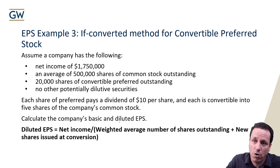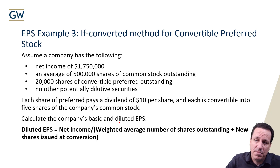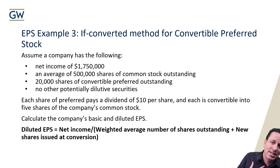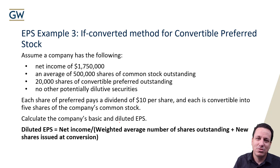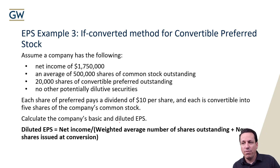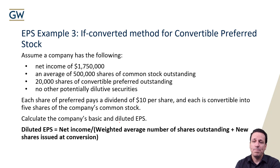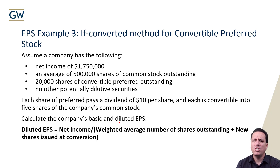So let's assume these convertible preferred shares can convert into common shares, and walk through an example. Net income is $1.75 million, from the income statement. The average shares of common stock outstanding is 500,000 — that weighted average is given to us. We also have 20,000 shares of convertible preferred outstanding, and no other potentially dilutive securities. Each preferred share pays a dividend of $10 per share, so $10 times 20,000 shares equals $200,000 in total preferred dividends.